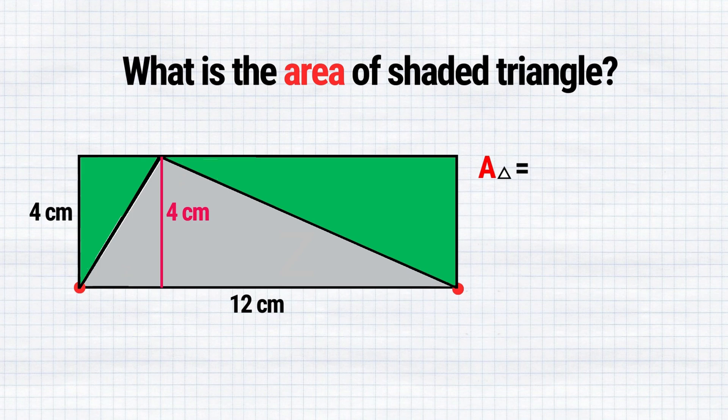To find the area of any triangle, we multiply the base by the height and divide by 2. In our case, the base of the triangle is 12, and the height is 4, so we divide the product by 2.